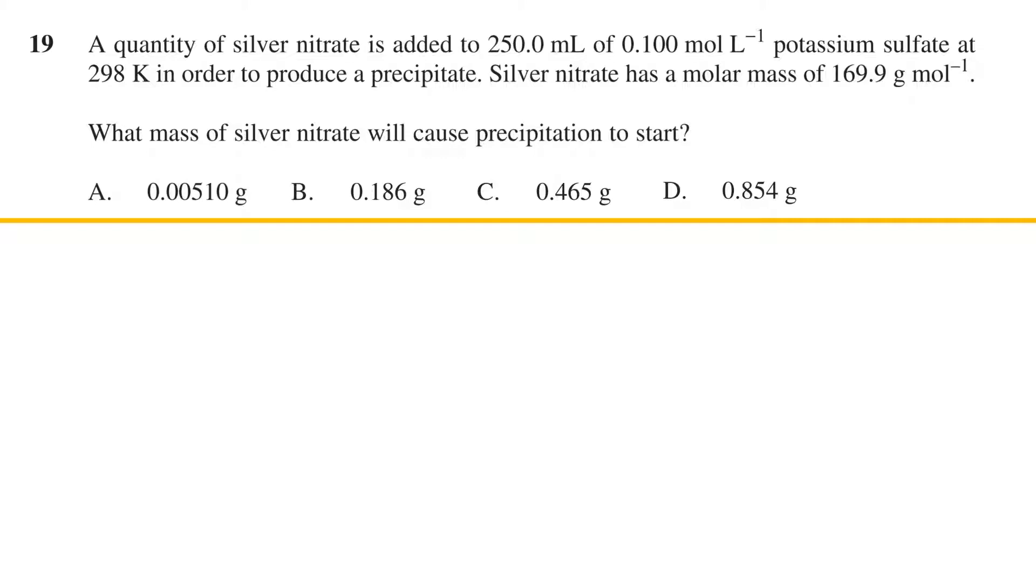To answer this question let's make some room and start with listing out the information we can gather. The formula for silver sulfate is Ag₂SO₄ as the silver has a charge of plus 1 and sulfate has a charge of negative 2. The solubility product Ksp for this salt will then be equal to the silver ion concentration to the power of 2 multiplied by the sulfate ion concentration.